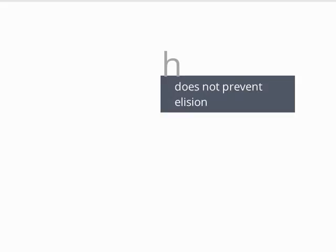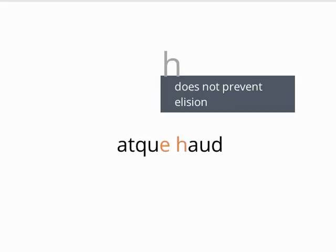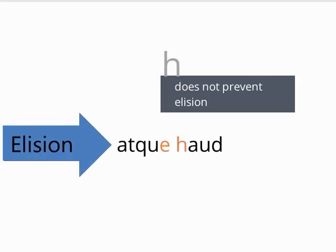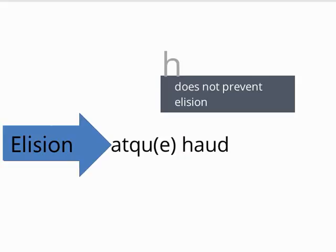Remember that H's are not strong sounds in Latin, so they do not tend to prevent elision from occurring. For example, the Latin words atque haud involve an elision, with the standard pronunciation being atquaud.